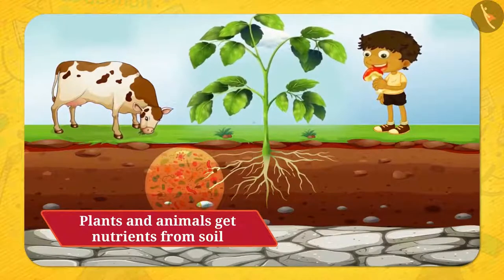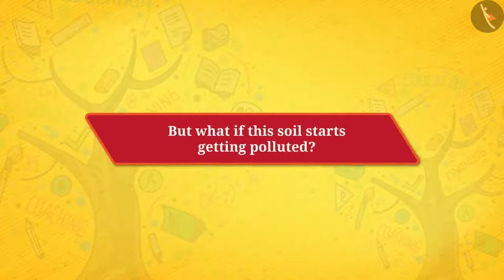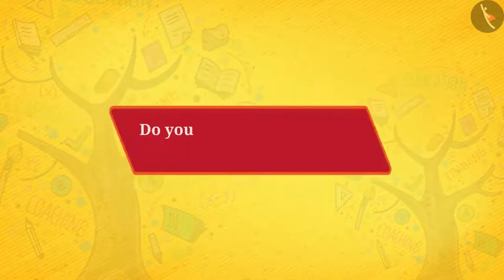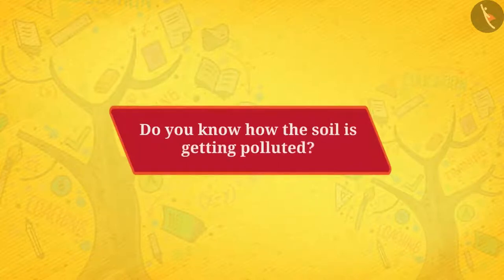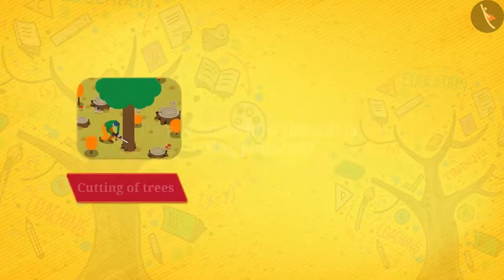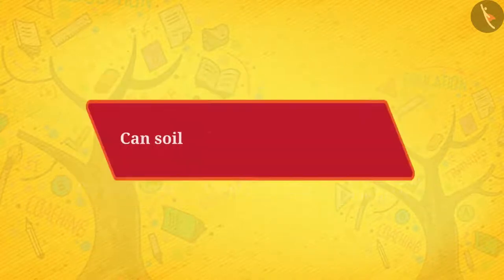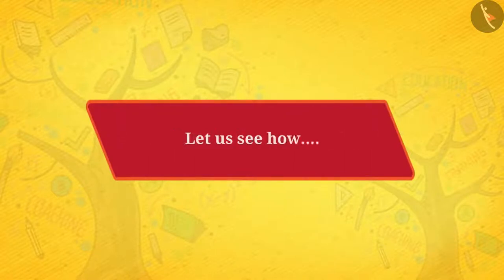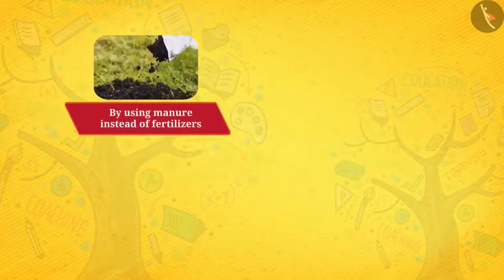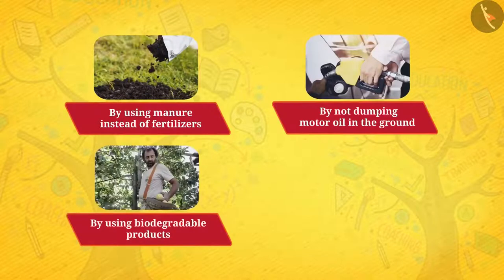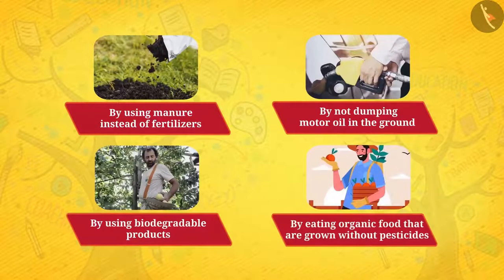Apart from this, soil is also the home of many organisms. But what if the soil starts getting polluted? We all are facing lots of problems due to soil pollution — for example, low yield of crops and harmful diseases such as cancer. The main causes of land pollution are the cutting of trees and use of pesticides and fertilizers in the fields. Soil pollution can be prevented by using manure instead of fertilizers, by not dumping motor oil in the ground, by using biodegradable products, and by eating organic food grown without pesticides.